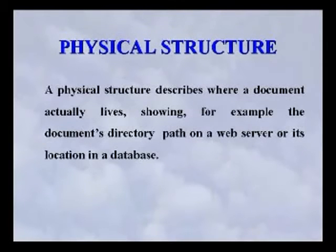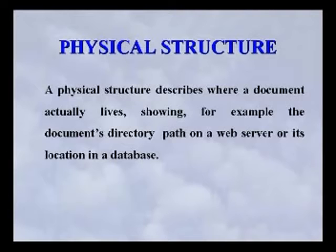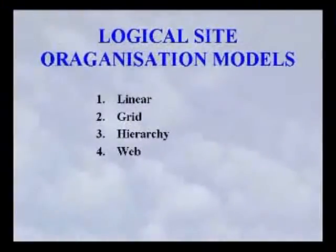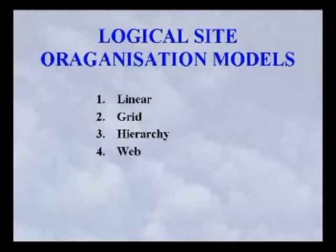A physical structure describes where a document actually lives — showing, for example, the document's directory path on a web server or its location in a database. There are four different categories of logical site organization models: hierarchy, grid architecture, linear, and web architecture.